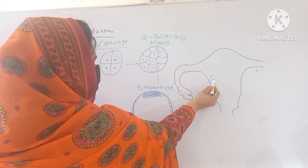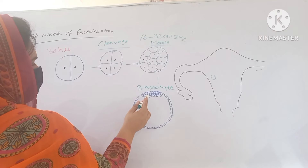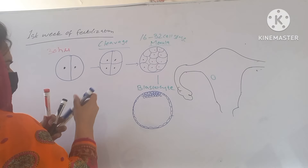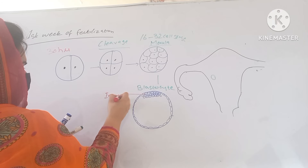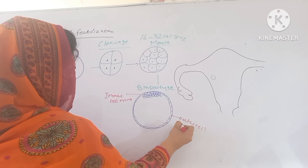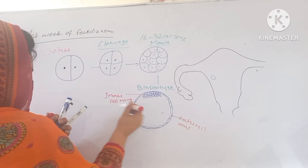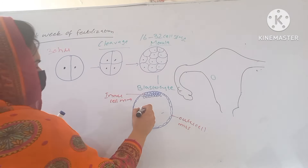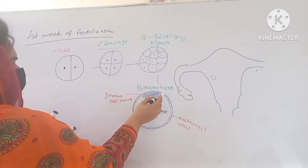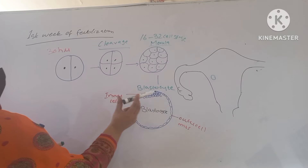When the morula is in the uterine cavity, fluid from the uterine cavity begins to enter into the morula. The cells rearrange into the inner cell mass and the outer cell mass. As the fluid seeps in, the cavity which is formed is known as the blastocoel. At this stage, the morula is known as the blastocyst.